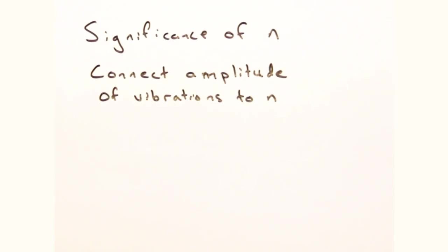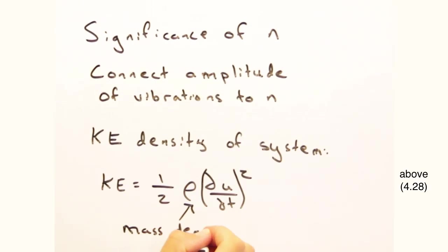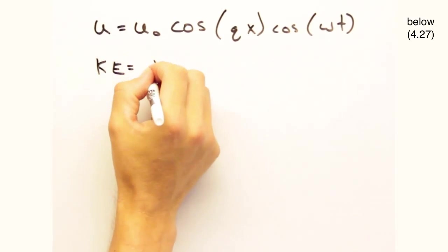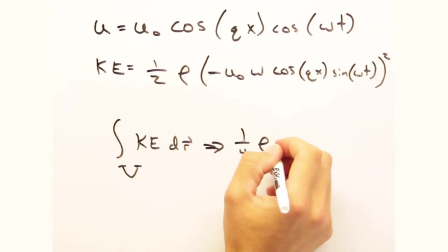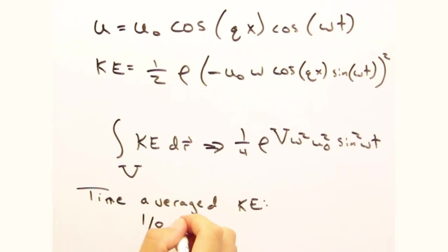We can actually prove this by looking at the kinetic energy density in our system. Instead of the exponential, we'll use the simpler form for u, just using cosines. Plugging that into our kinetic energy expression, taking an integral over the crystal volume v, and looking at the time average, we get an expression for the total kinetic energy in terms of mass, omega, and amplitude.